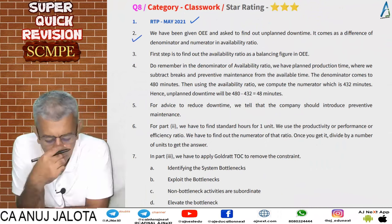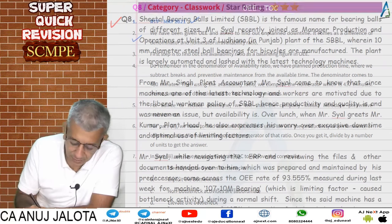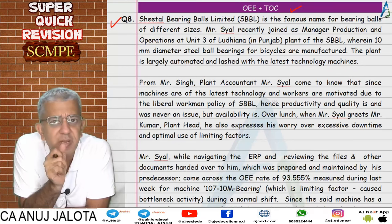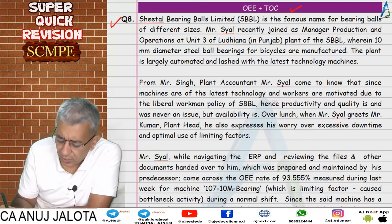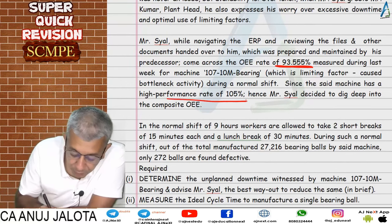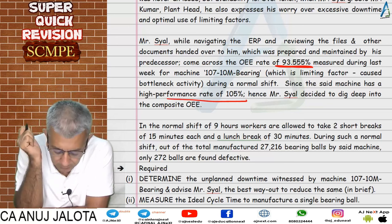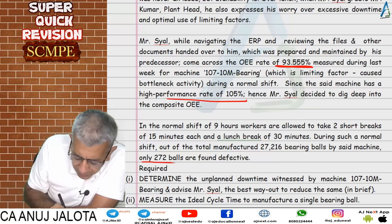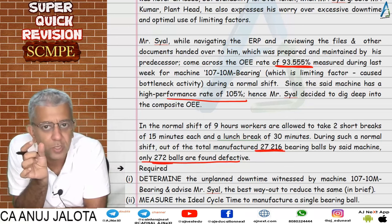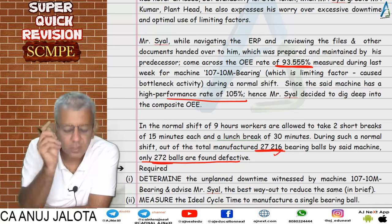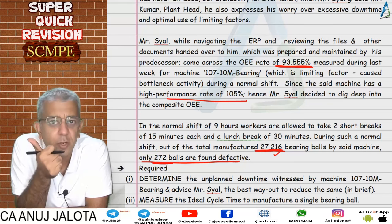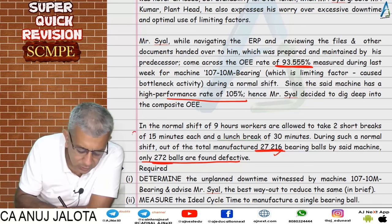The next question is about OEE (Overall Equipment Effectiveness) and Theory of Constraints. In this question, OEE was given directly. Performance ratio was also given. Quality ratio was easy to find: out of total units, defective units were given, so subtracting defectives gives good units, and good units divided by total gives the quality ratio. So we had OEE, performance ratio, and quality ratio.